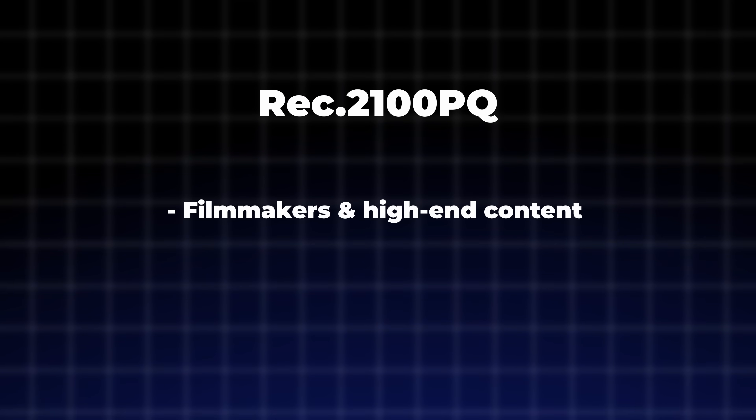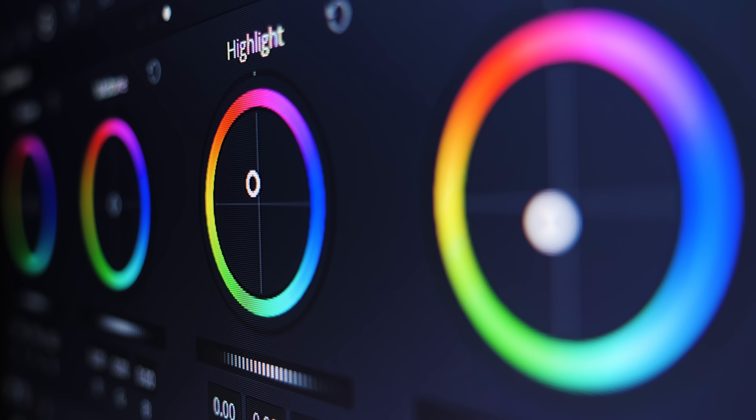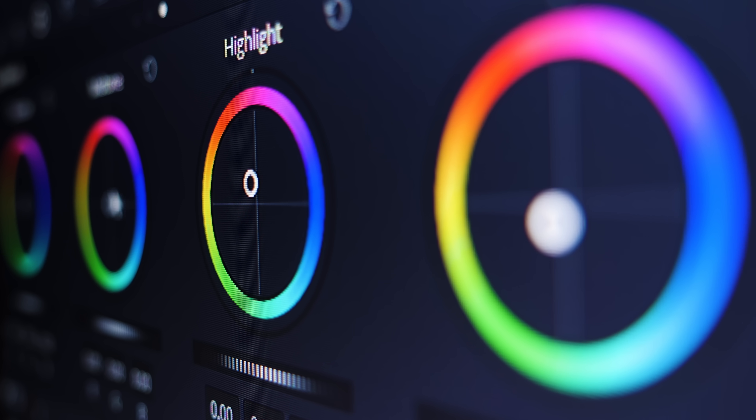REC2100 PQ is more for filmmakers and high-end content. It was developed by Dolby and this HDR format is for mastering films and streaming content, like for Netflix and Disney Plus. It also requires very precise grading, but will offer better HDR accuracy. However, it's not backwards compatible with SDR displays.